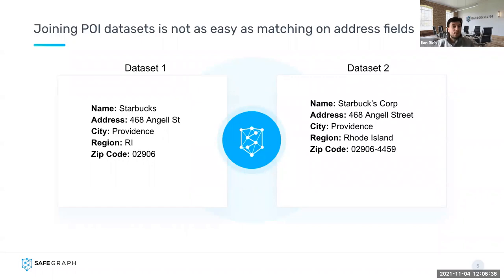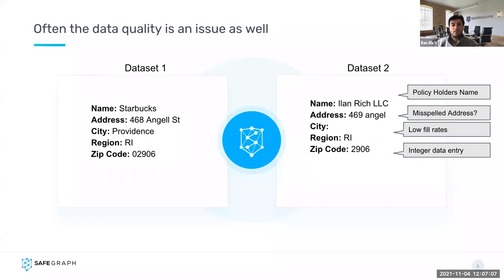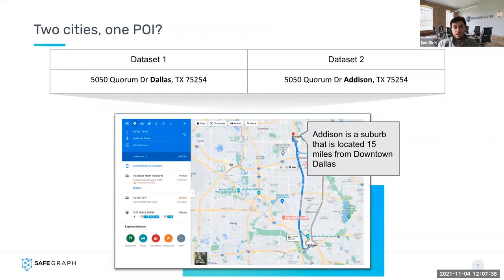So why is this a challenge? Here I present two POI data sets. If I wanted to join them on name, address, city, region, and zip code, these two records would not end up being joined. Data set two looks relatively clean, but almost every field is different — the name includes a corporation suffix, the street is not abbreviated, Rhode Island is not shortened, and the zip code has nine digits. In practice, things are often much messier — the location name may be a policy holder's name, the address may be misspelled, and the zip code may have been ingested as an integer, dropping the leading zero.